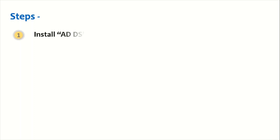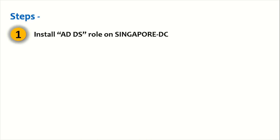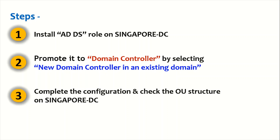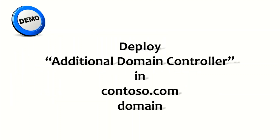Let's understand the steps for promoting a server as an additional domain controller. Number one: install the Active Directory Domain Services role on Singapore DC. Number two: promote it to a domain controller by selecting the option 'new domain controller in an existing domain.' Then complete the configuration and check the OU structure on Singapore DC. Let's jump into the labs now.